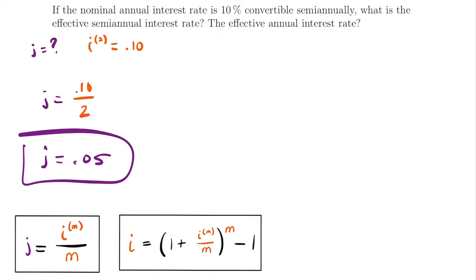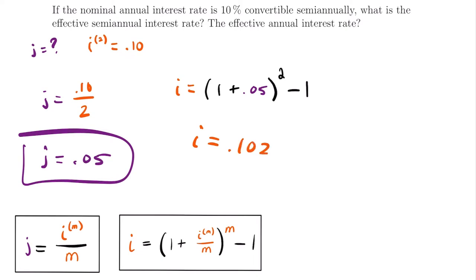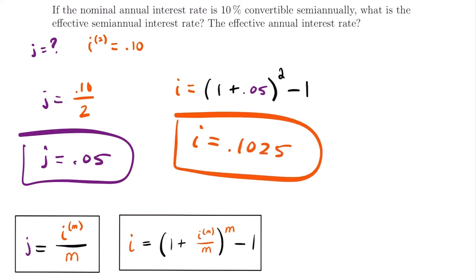Then to find the effective annual interest rate, we use I = (1 + 0.05)^2 − 1. Since the rate is convertible two times per year, M = 2. Plugging this into our calculator gives I = 0.1025. That is the equivalent effective annual interest rate when the nominal annual interest rate is 10% convertible semi-annually.